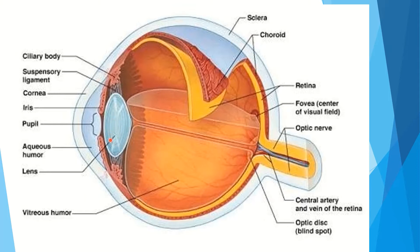This is the iris. It controls the amount of light entering the eye. The pupil is the hole in the center of the iris. It allows light to enter and pass through the lens. And this is the ciliary muscle, which adjusts the lens and helps to change its curvature.